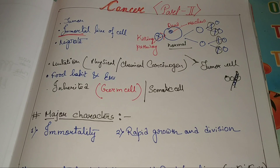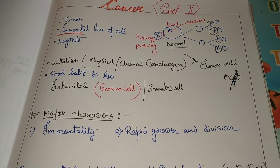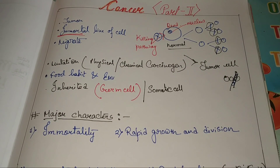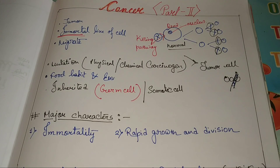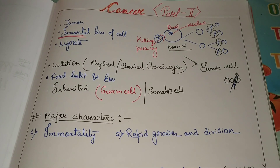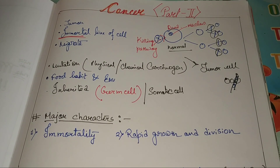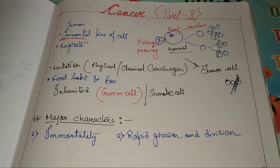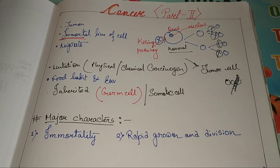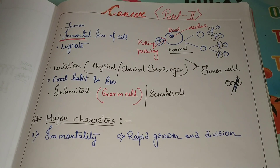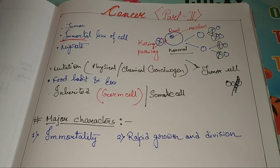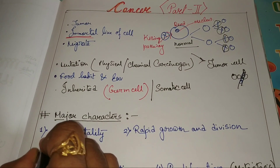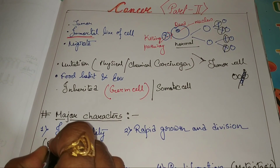One of the major characteristics of a cancer cell is immortality. Already I have discussed that. But how does this immortality come about? How do they gain this character? We need to know that. This immortality comes from a faulty checkpoint.